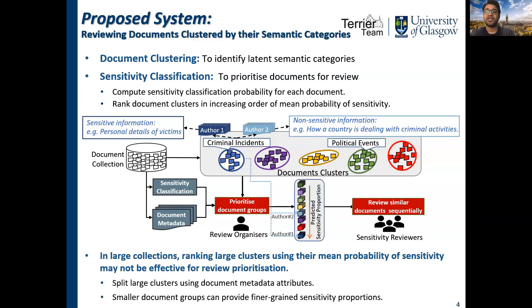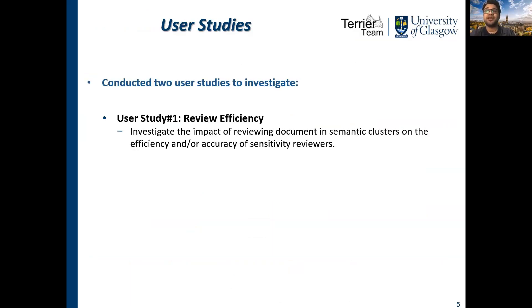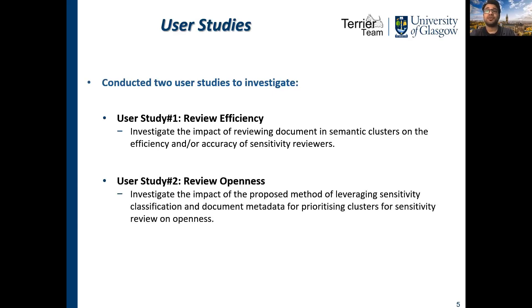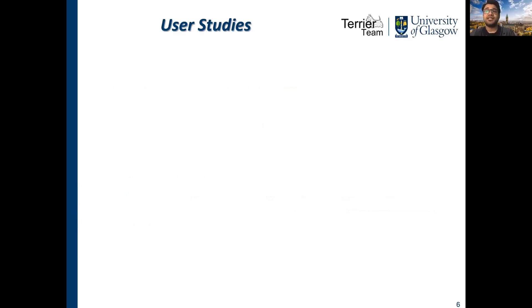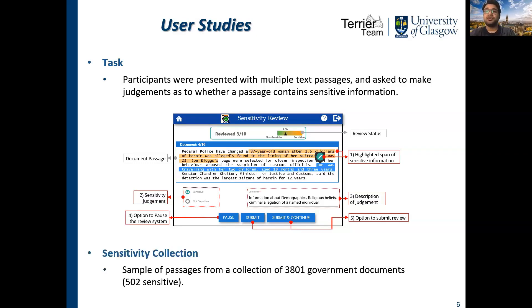Therefore, we propose to leverage document metadata information to split large clusters into smaller semantic document groups that can provide finer-grained sensitivity proportions for effective review prioritization. We conducted two user studies to evaluate the effectiveness of different clustering techniques for grouping semantically related documents to increase the efficiency of sensitivity reviewers and the effectiveness of the proposed method of prioritizing document clusters to increase the number of documents open to the public in a fixed time frame. For our user studies, we developed a web-based reviewing interface where participants were presented with multiple text passages and were asked to make a judgment as to whether a passage did or did not contain any sensitive information. We sampled the text passages from a collection of Kerman documents annotated for freedom of information sensitivities.